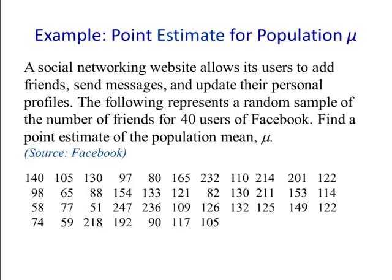The following represents a random sample of the number of friends for 40 users of Facebook. Find a point estimate of the population mean mu.